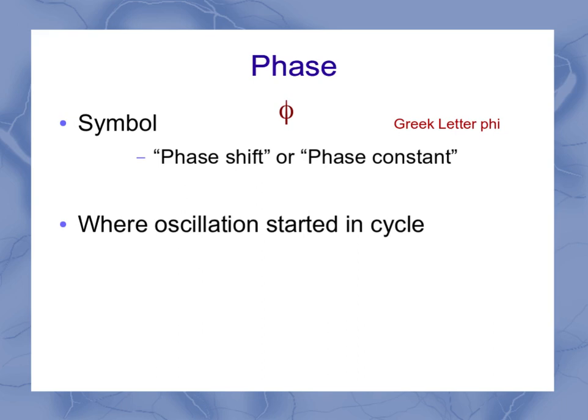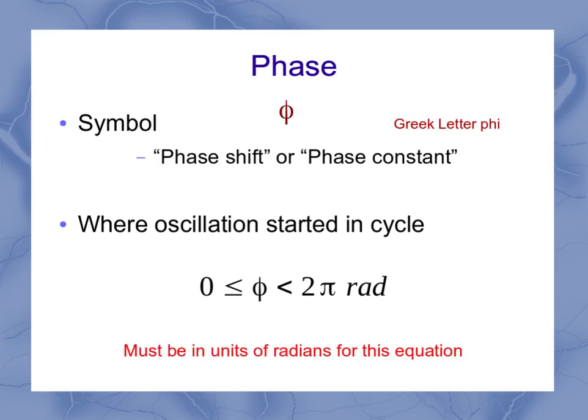It's really a measure of where the oscillation started in the cycle. So your phi value is going to be somewhere between 0 and 2 pi radians. It could be equal to 0 or anywhere up to 2 pi, but it must be in units of radians for this equation.